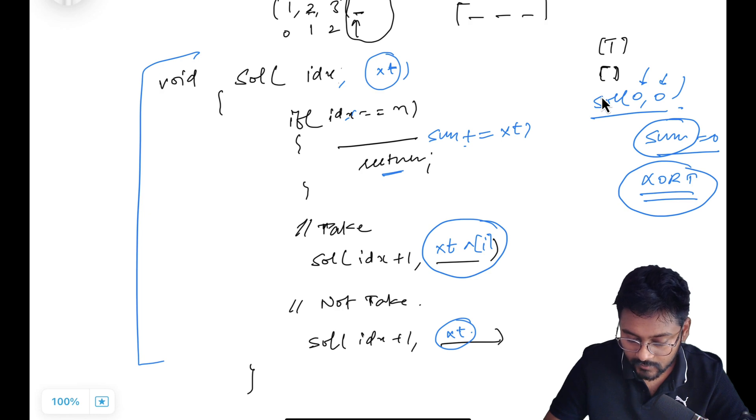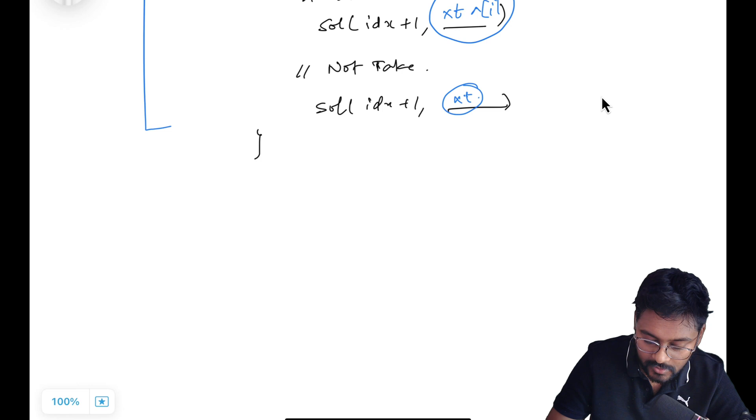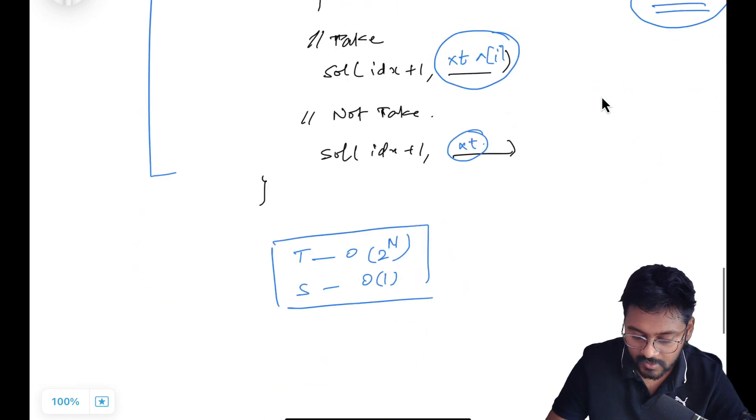And in this code, I am going to take two possibilities at every step. So 2 to the power n will be the time complexity of my approach. And what about the space complexity? I don't think I am taking any extra space. No extra space is being taken.